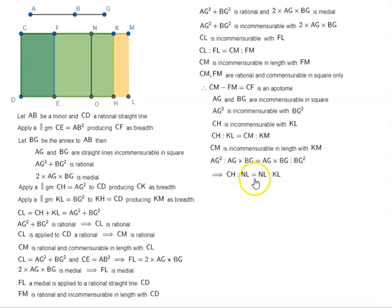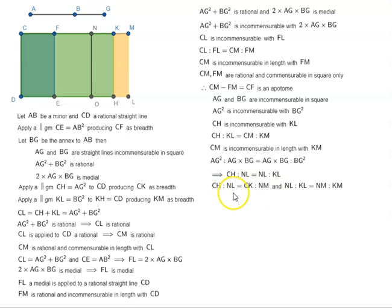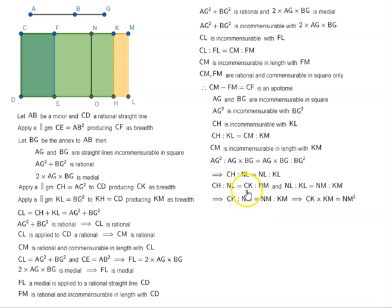We have CH:NL = NL:KL, where AG² = CH, AG·BG = NL, and BG² = KL. And CH:NL = CK:NM, and NL:KL = NM:KM, which implies CK:NM = NM:KM. So NM is a mean proportional between CK and KM, meaning CK·KM = NM². And NM² equals one quarter of FM², because N is the midpoint of FM.